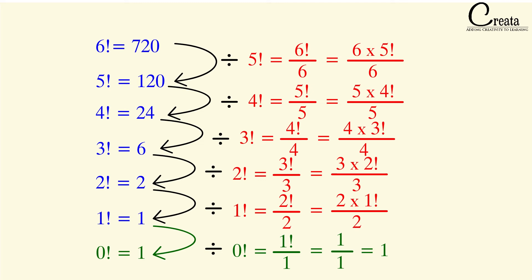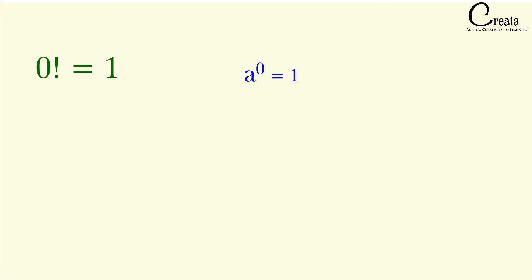Since 1! = 1, we get 0! = 1! ÷ 1 = 1. This is very important — 0! = 1, and it will be used throughout mathematics, especially in competitive exams. We can correlate this with the fundamental of powers: just as a⁰ = 1 for any number a, 0! = 1. The technique to derive the result is similar in both cases.